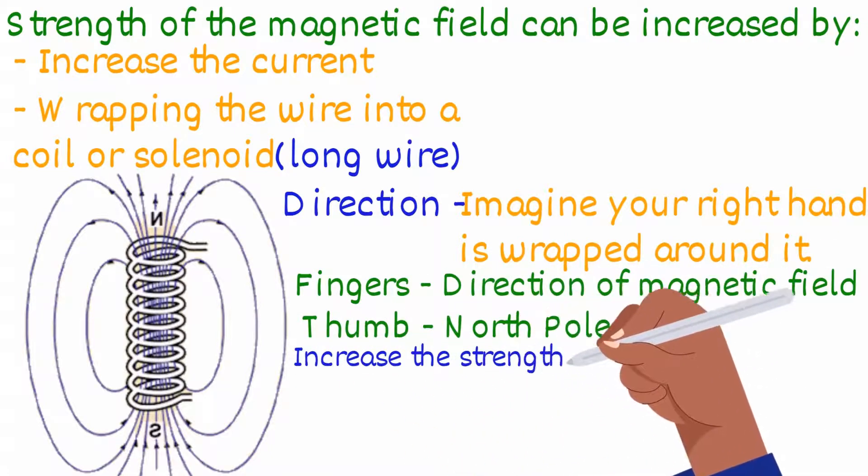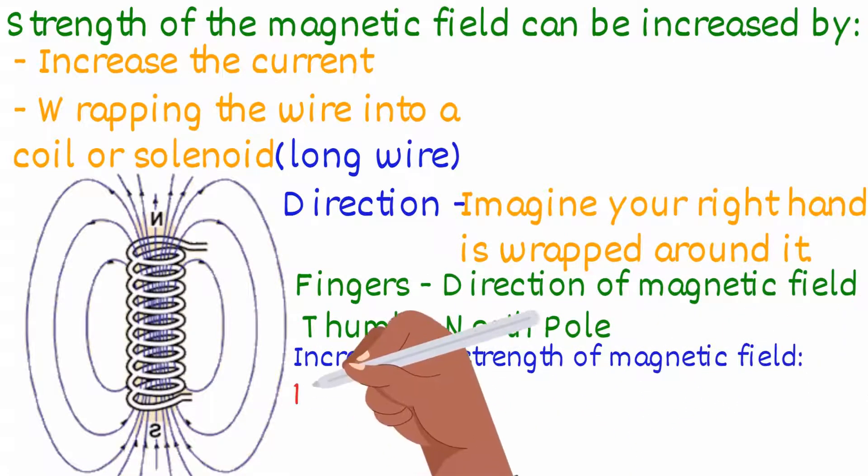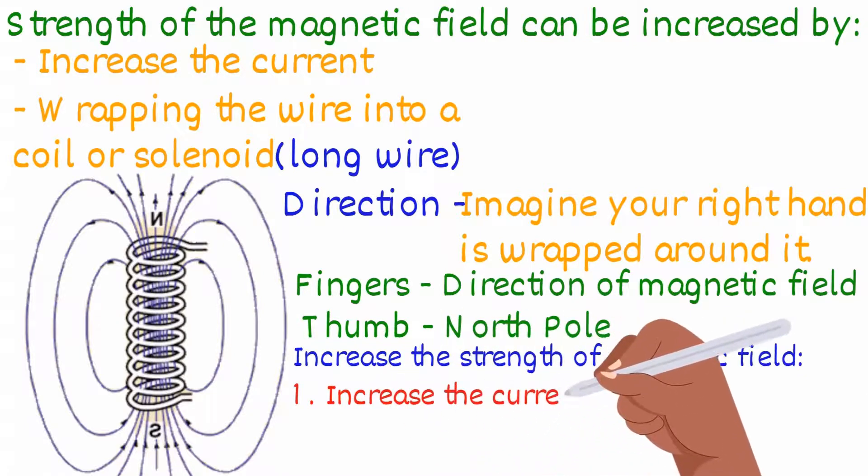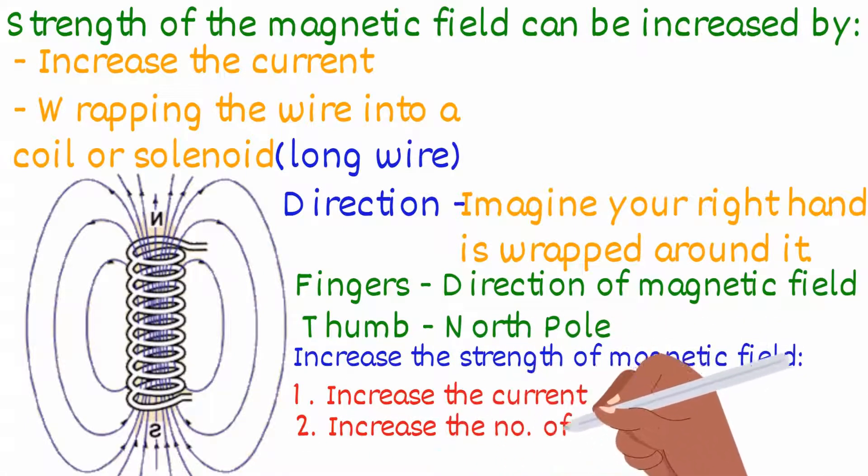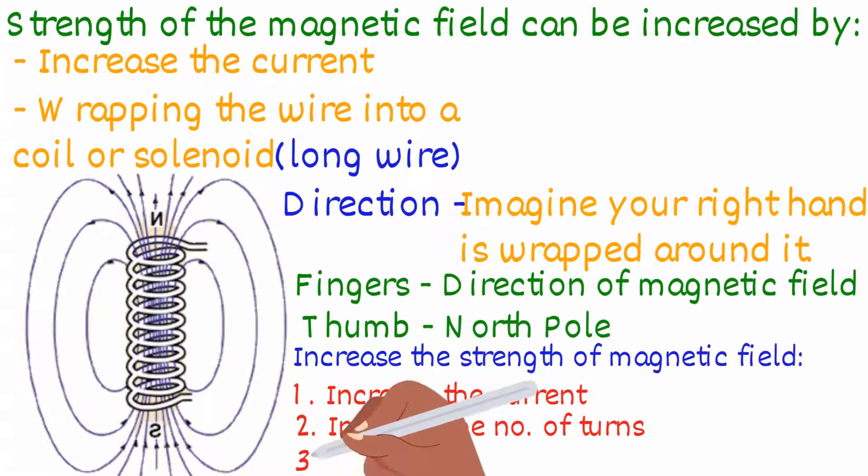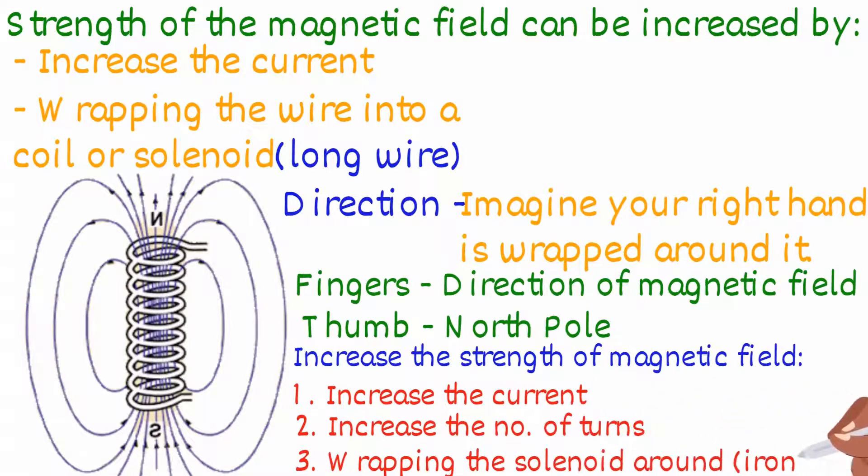The way to increase the strength of the magnetic field is by one, increasing the current; two, increasing the number of turns on the solenoid; and three, wrapping the solenoid around a magnetically soft core such as iron.